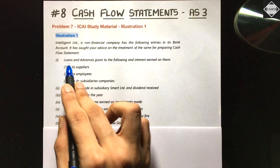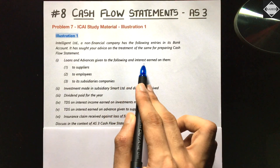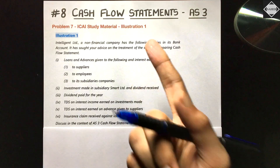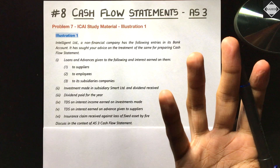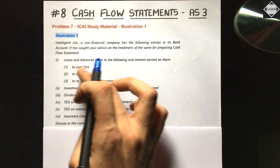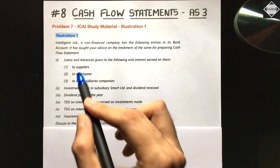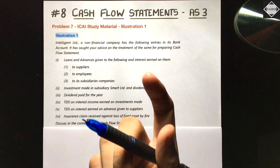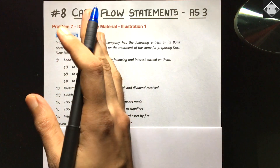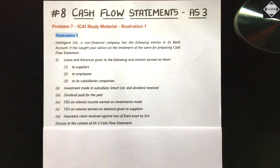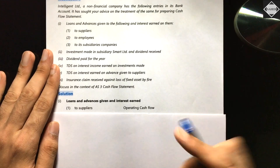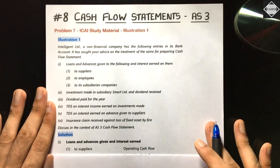The first item: loans and advances given to suppliers and interest earned on them. Suppliers are related with the purchase of inventory, which is the main operation of the business. So loans given to suppliers and interest earned on that will be an operating cash inflow. The same logic applies to employees — companies often provide loans to employees, and interest earned on those is also an operating cash inflow.